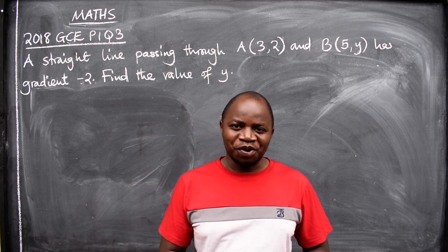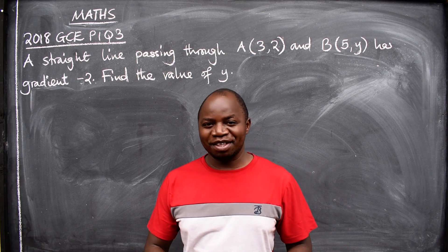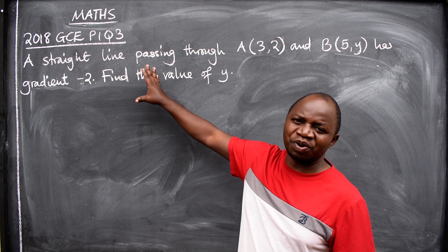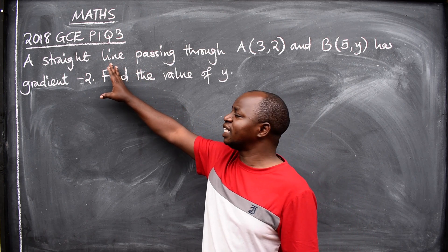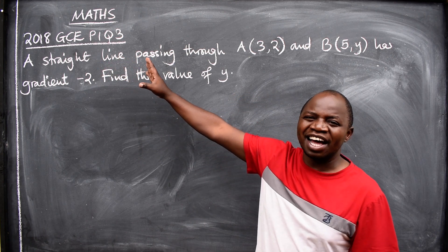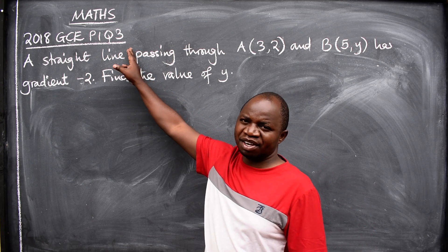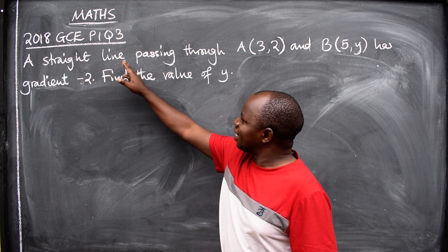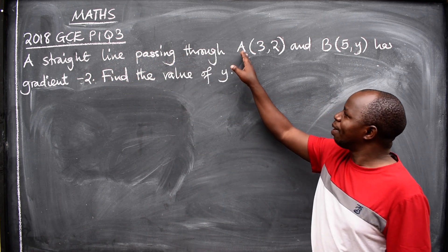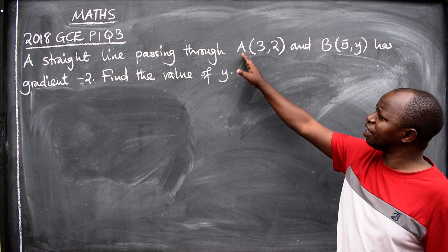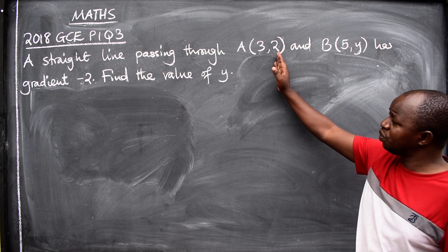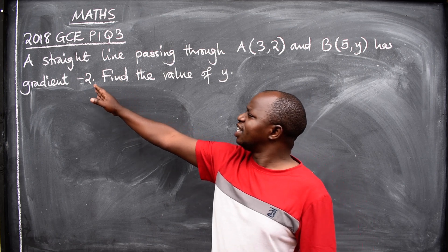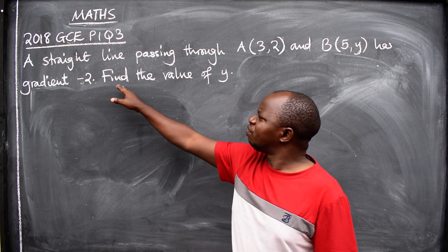Hello viewers, hope you are well. This is mathematics. In this video, let's look at this question coming from 2018 GCE Paper 1, question number 3. The question reads: A straight line passing through point A(3,2) and B(5,y) has gradient -2. Find the value of y.